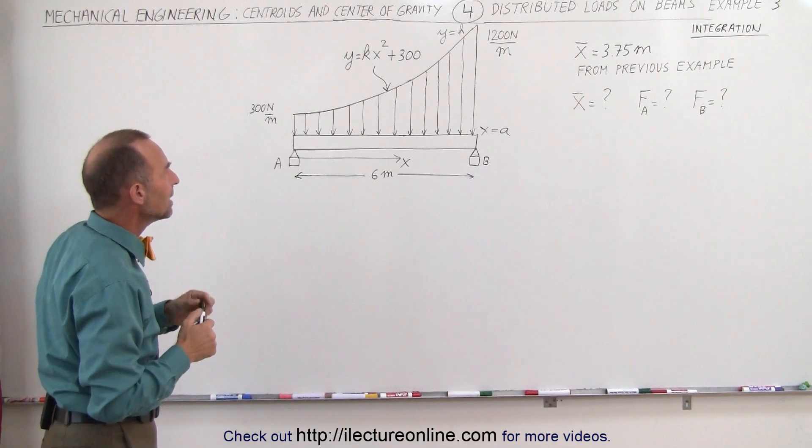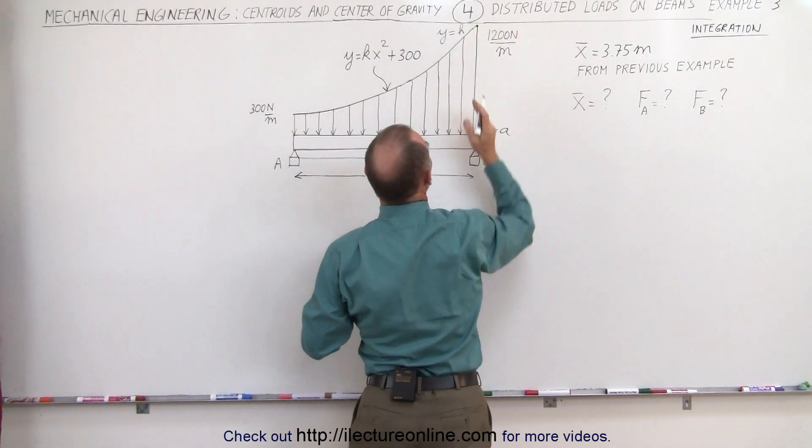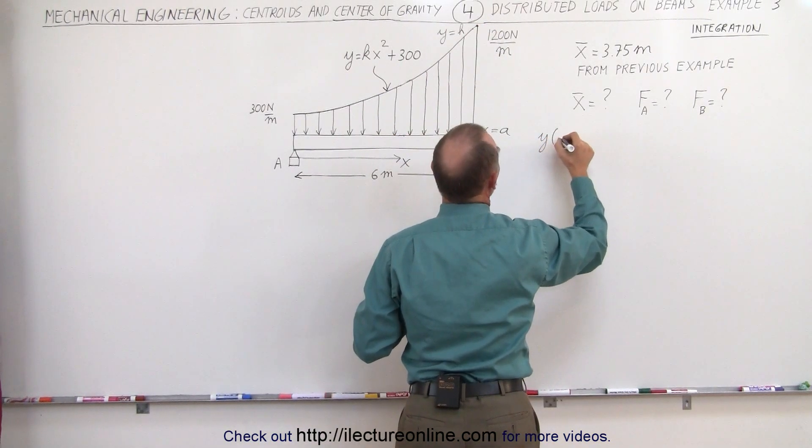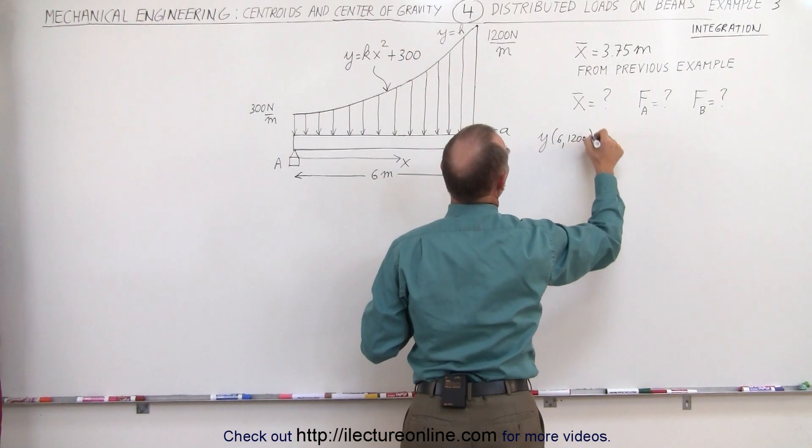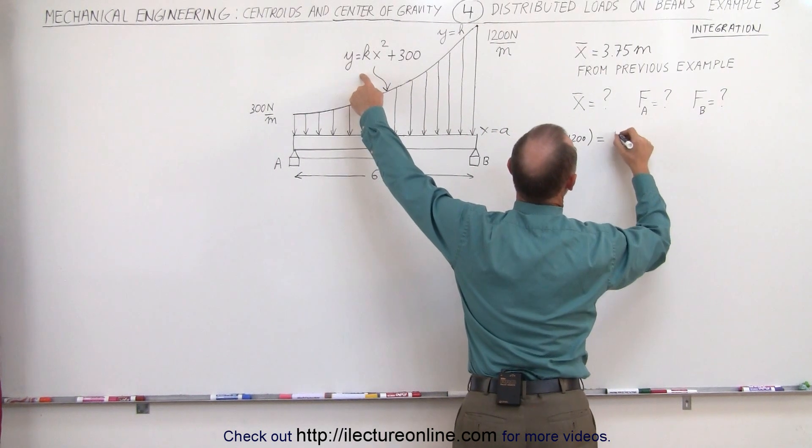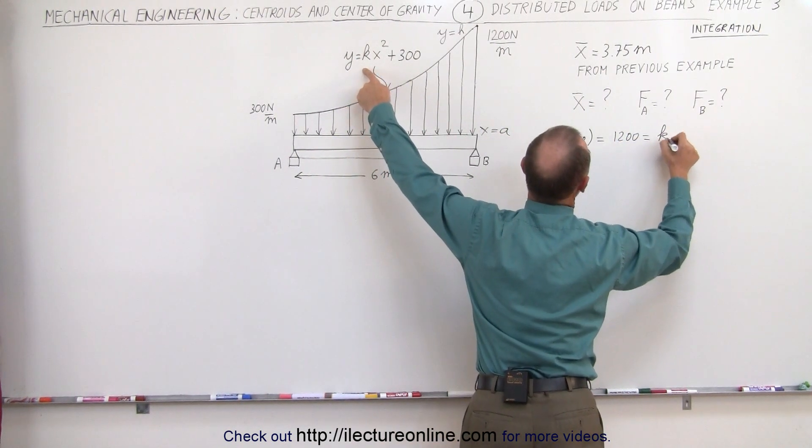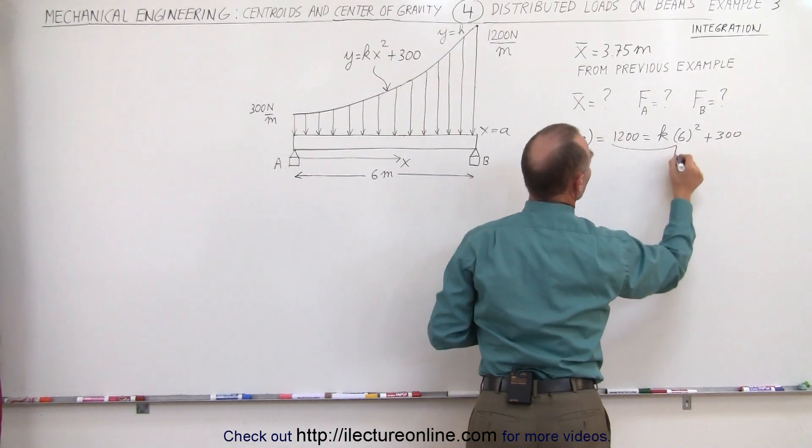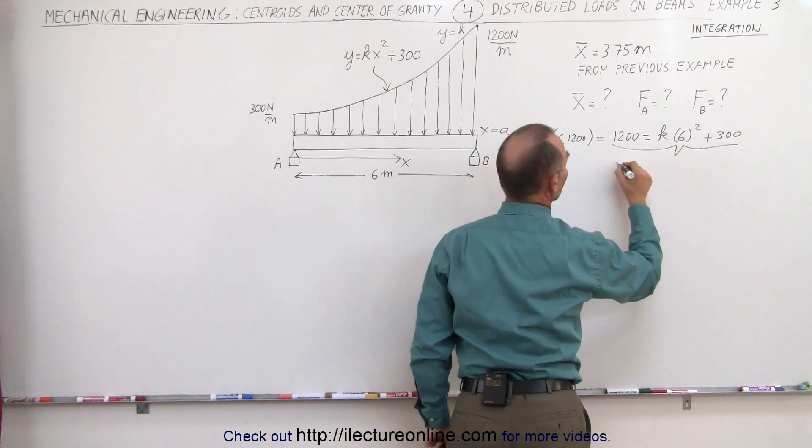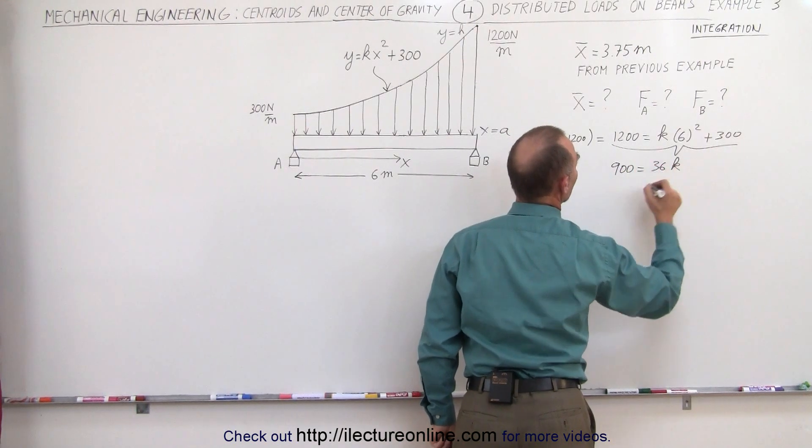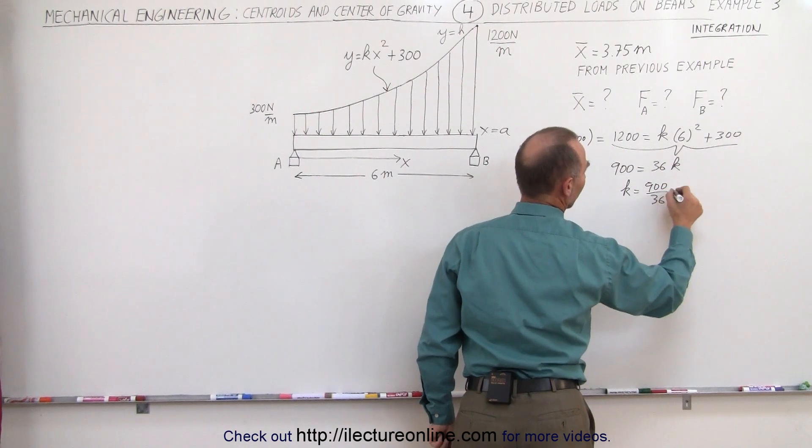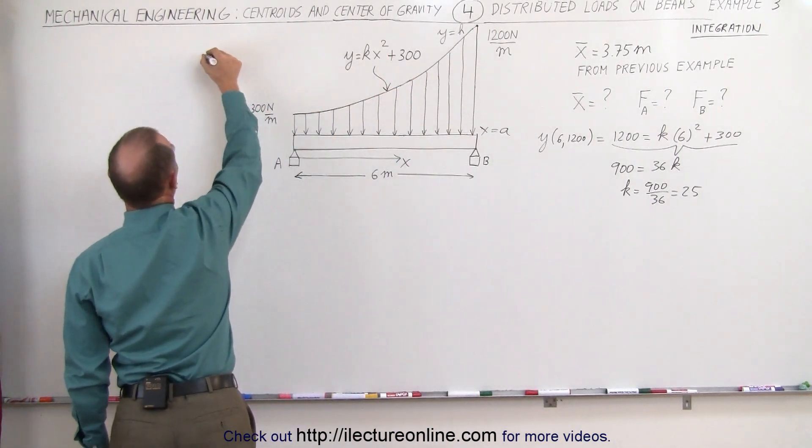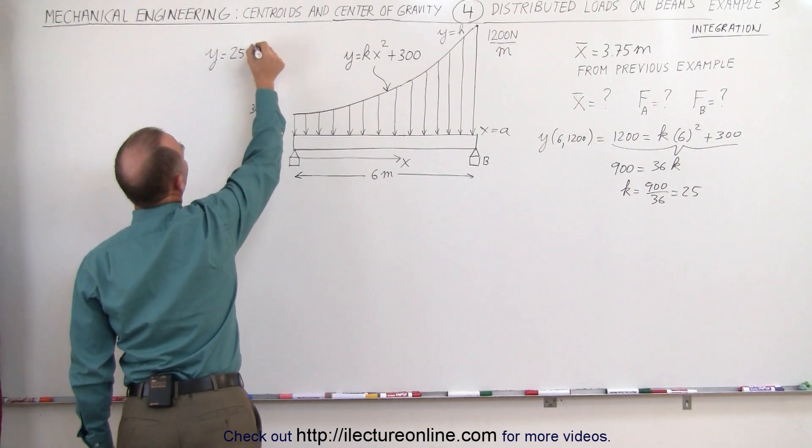To find the value for k, we're going to plug in this value right here. This value for x we get 6 and for y we get 1200. So y when x is equal to 6 and y is equal to 1200 is equal to 1200 equals k times x squared which is 6 squared plus 300. We subtract 300 from both sides, that gives us 900 is equal to 36k or k is equal to 900 divided by 36 which is equal to 25, which allows us to plug that into our equation so the force load on the beam can be expressed by the equation y equals 25x squared plus 300.